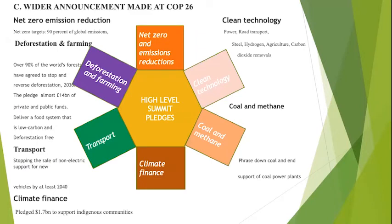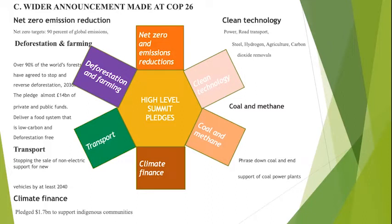Parallel to the negotiations, at the last negotiations in Glasgow COP26, there was a high-level summit. In this high-level summit, a number of pledges were made, which were directed towards raising ambitions so that our efforts will be directed towards meeting the temperature goal. We saw that almost 90 percent of global emissions are covered by parties that have already pledged net zero emission reduction by the end of the century. We saw that there was a strong pledge for deforestation and farming, whereby the world came together and some leaders agreed to stop and reverse deforestation by the year 2030.